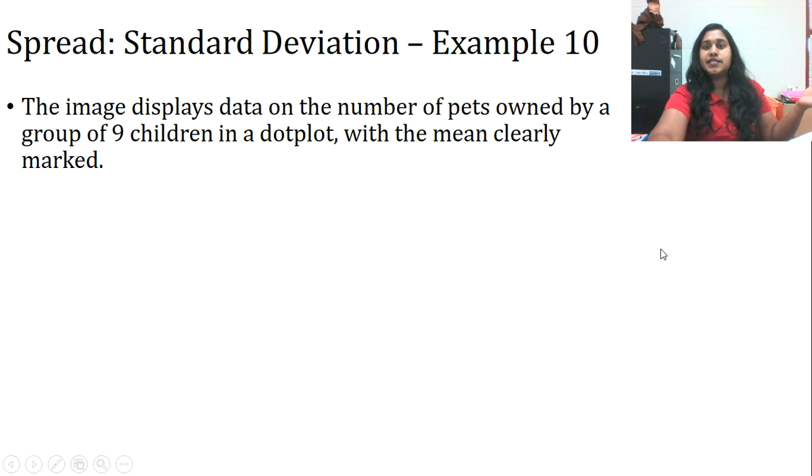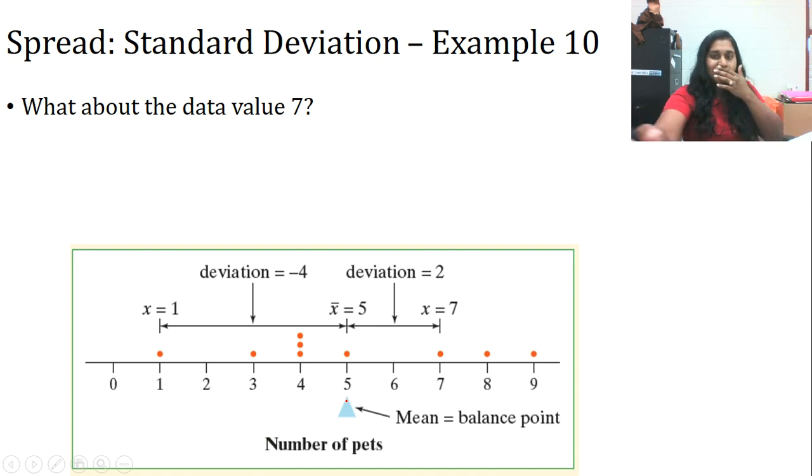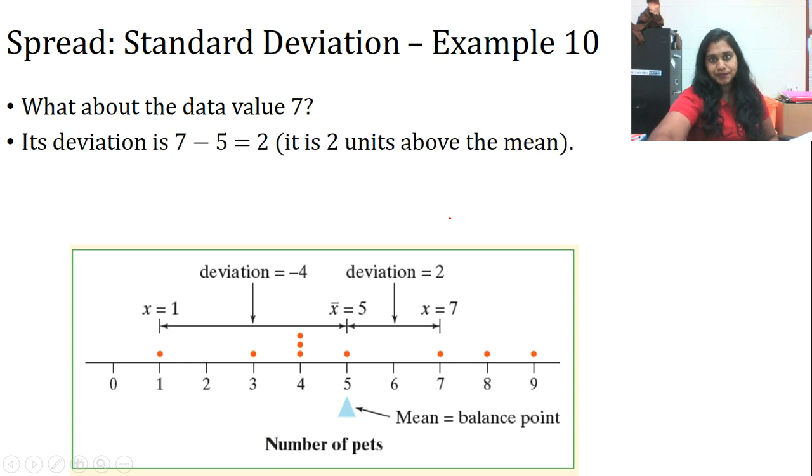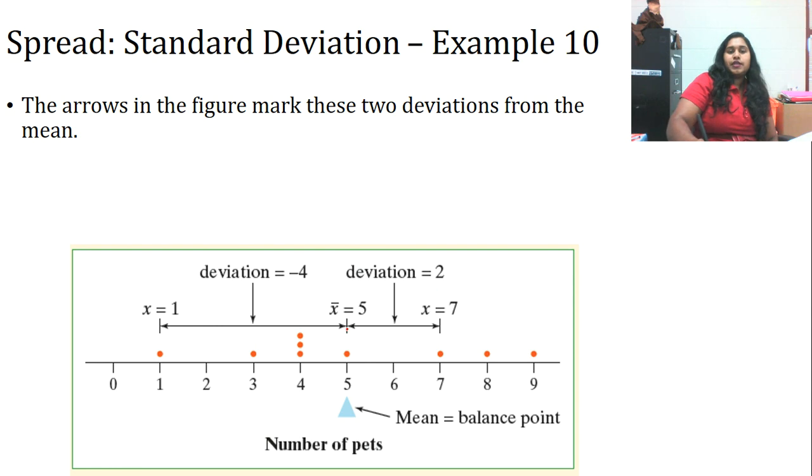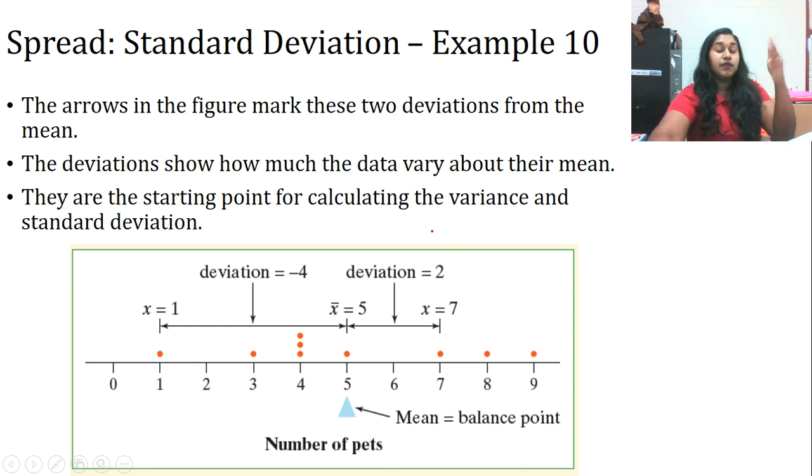This is the definition of standard deviation. And I'm going to just kind of walk you through it step by step with an example. Really briefly, the steps for standard deviation. Kind of general idea of the standard deviation. Again, I'm going to walk you through it. Not necessarily differently, but my own language. So, I've got this image of data that displays the number of pets owned by a group of nine children in a dot plot. With the mean clearly marked. Oh, where is it? Oh, there it is. Okay. My bad. So, here is the data that I should have had pulled up. The data value one, this is what they're talking about. The data value one is four units below the mean. My mean was at five. It's clearly marked. My balance point is marked. So, if how far away is one from five? That's all a deviation is. How far away is it? Well, it's four away, but it's four away to the left. So, it's negative four away. It's in the negative direction.